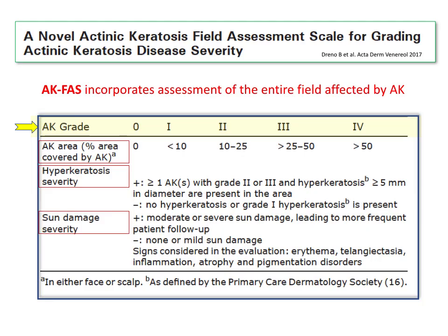The AK-FAS scale is based on the assessment of the combination of the total skin area affected by the AK lesions, which is graded on a 5-point scale depending on the percentage range of skin area covered by AK lesions. Furthermore, hyperkeratosis and sun damage are evaluated as present or absent.